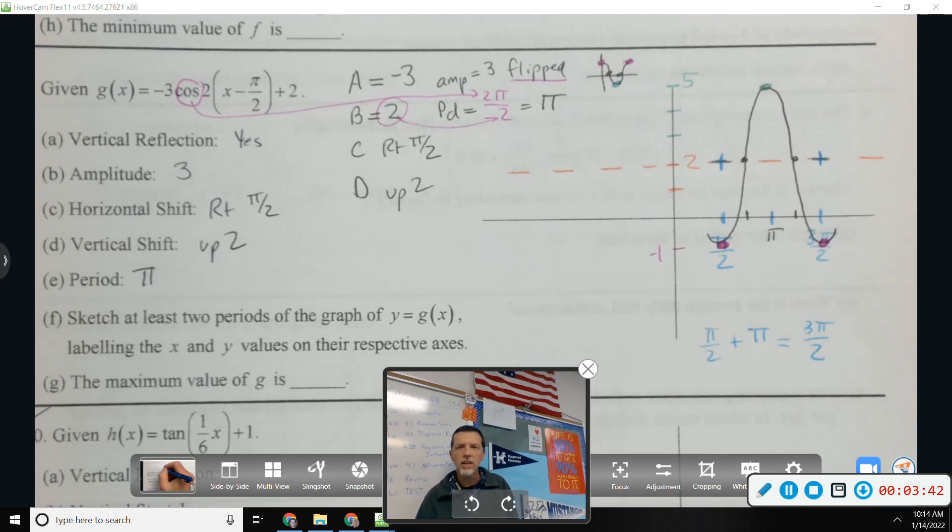It's been flipped. It's been stretched. It's been moved up. And it's been moved to the right. If you could graph that one, you could graph any of them. Because every possible translation has happened to that one.